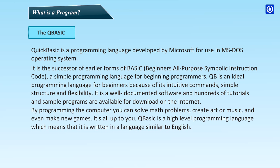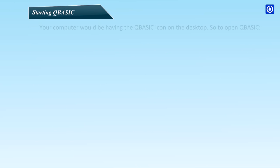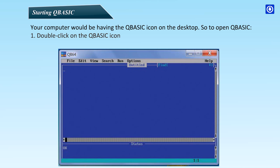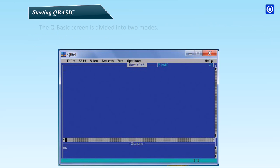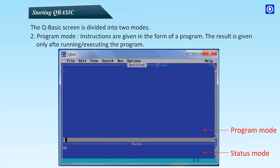QBasic is a high-level programming language, which means that it is written in a language similar to English. Starting QBasic: your computer would have the QBasic icon on the desktop. Double-click on the QBasic icon to open it. A blue screen appears. The QBasic screen is divided into two modes: Status mode and Program mode. Status mode gives the result as soon as the command is entered. In Program mode, instructions are given in the form of a program, and the result is given only after running or executing the program.